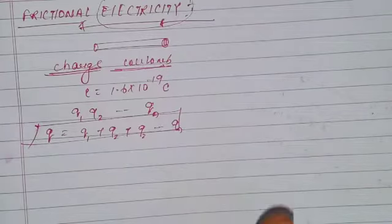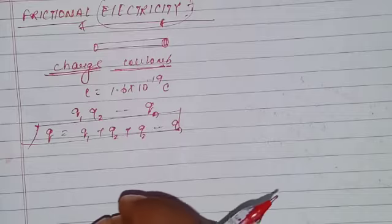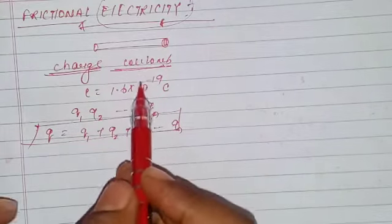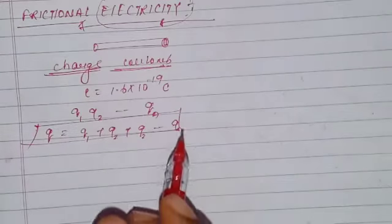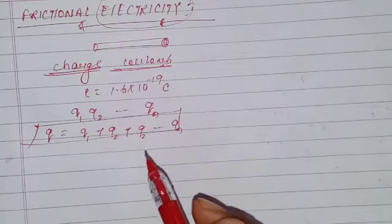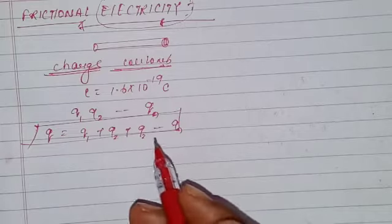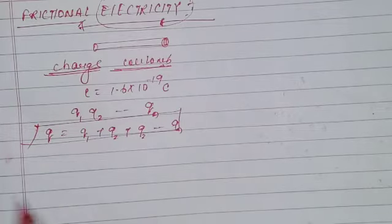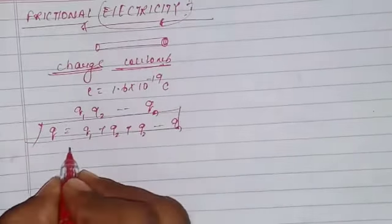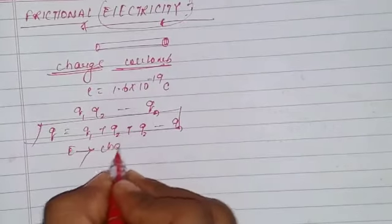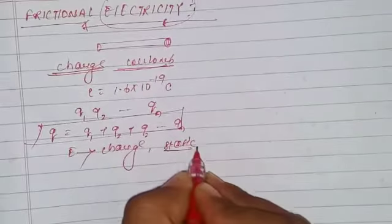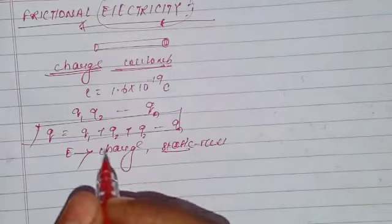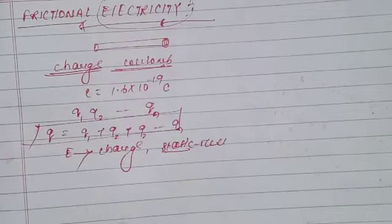Remember the definition of charge, whether it is scalar or vector, and its unit — these will come up throughout the chapter. The next topic is electrostatics. 'Electro' means charge (a Greek word) and 'static' means at rest, so electrostatics is the study of charge at rest.